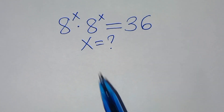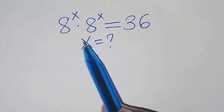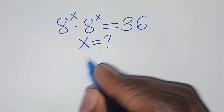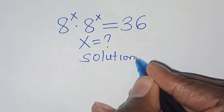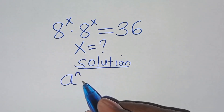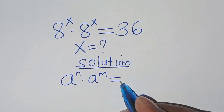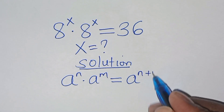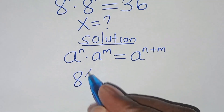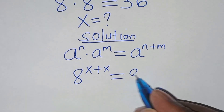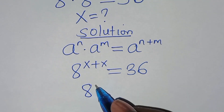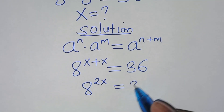Hello everyone, you're welcome to solve this nice exponential equation: 8 to the power x times 8 to the power x equals 36. What is the value of x? This exponential equation is in the form of 8^n times 8^m, which we can express as 8^(n+m). Applying this property, we have 8 to the power x plus x, which is 8 raised to the power 2x, equal to 36.